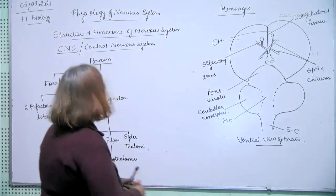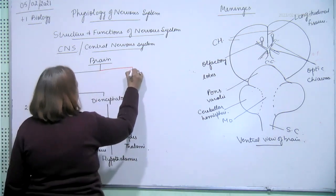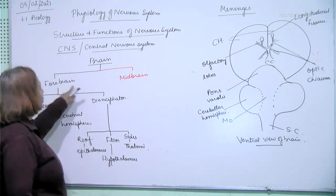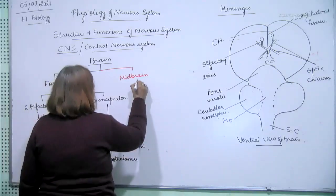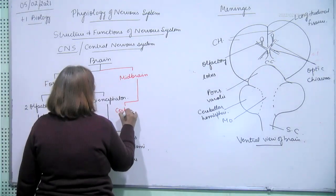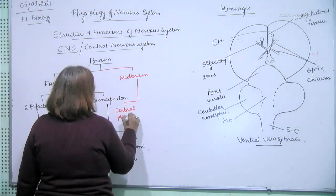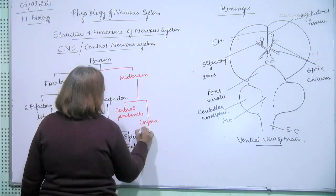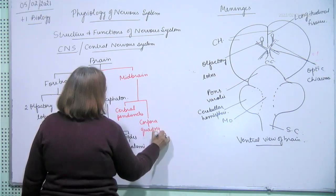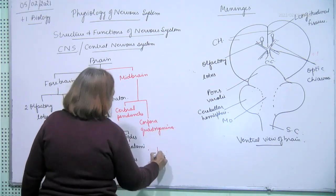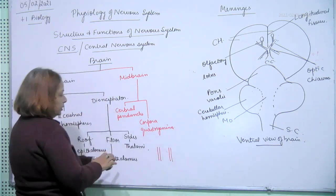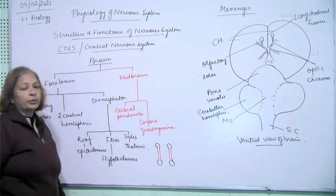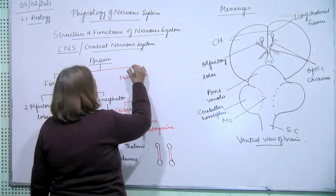Then there is present midbrain. Midbrain connects forebrain with hindbrain. It has cerebral peduncles and corpora quadrigemina. Two cerebral peduncles. Peduncles are stalk-like structure. And above these, there are four tubercles that are called as corpora quadrigemina.